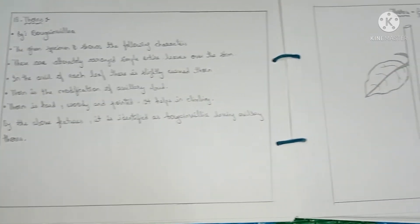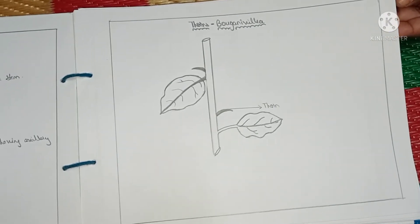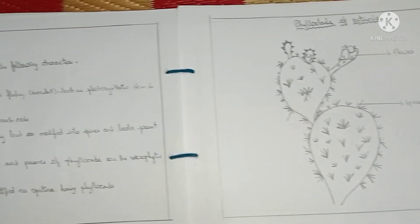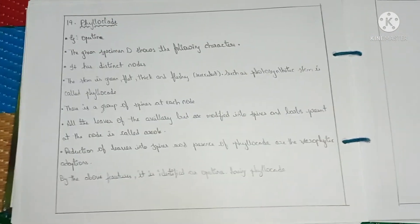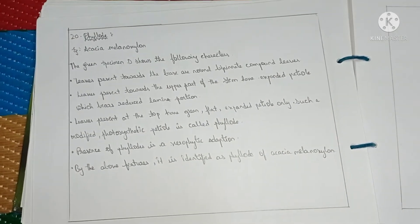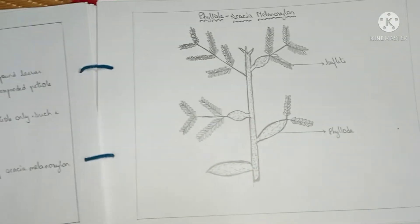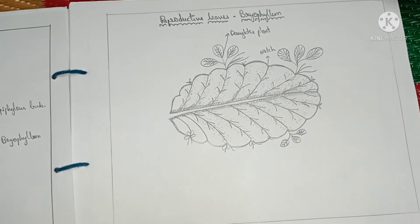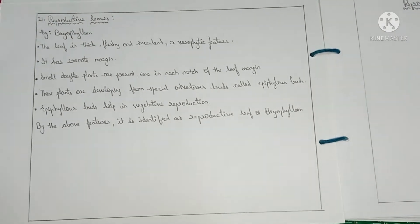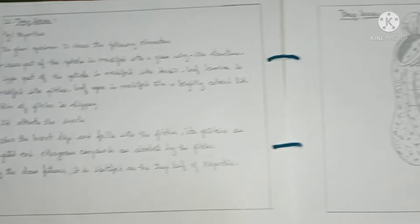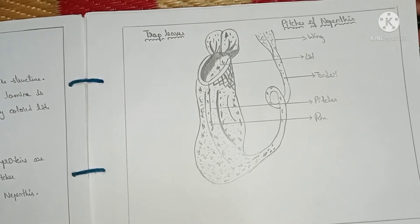Further modified stems: details of stem tendrils, details of thorns with Bougainvillea as example and diagram of Bougainvillea, diagram and details of phylloclades with Opuntia, phylloclades example Acacia melanoxylon, diagram of phylloclades, reproductive leaves with Bryophyllum as example and details of Bryophyllum, and details and diagram of trap leaves with Nepenthes as example.